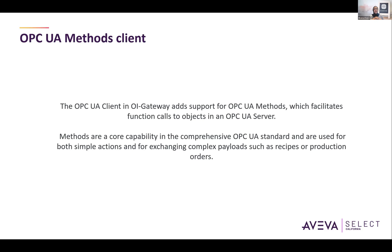The main feature in the 2023 R2 — the latest and greatest — is the OPC UA methods client. This is part of the OPC UA client driver in OIGateway. A method is defined as a procedure associated with an object or a behavior of said object, parameterized by a user within OPC UA. This means the object model exposed by an OPC UA server may contain procedures or behaviors that augment the state of the object or its data.